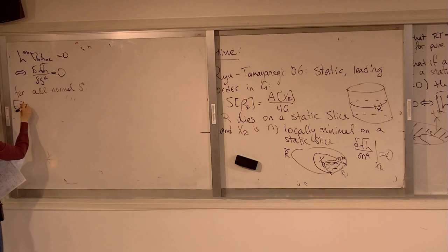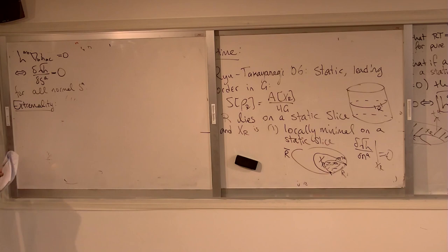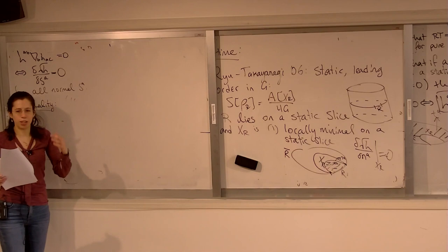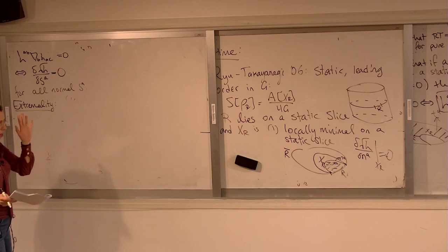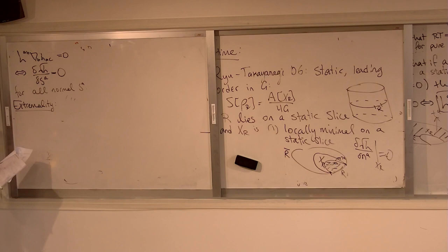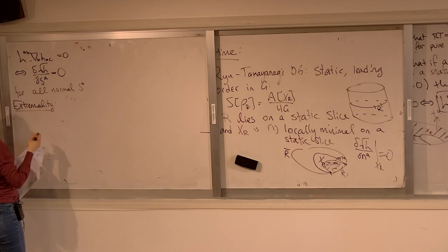The phrase people often use is 'extremality.' I don't love this because 'extremum' to me means minimum or maximum. I prefer the word 'stationary,' but this is the commonly used word these days, so we just roll with it. The extremum doesn't have a direction. So this is essentially the equivalent definition: this is a surface whose area is stationary under all perturbations in the location of the surface.